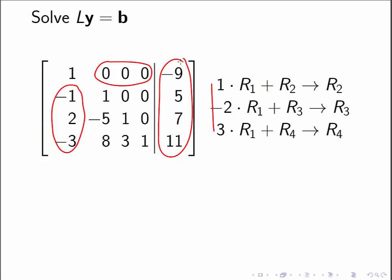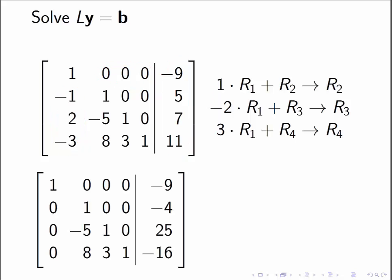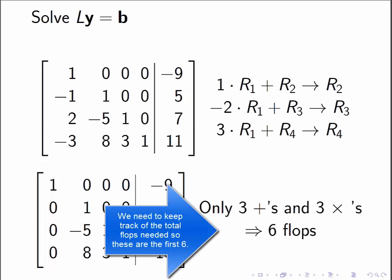So when I do the row operation 1 times row 1 plus row 2, I'm taking 1 times negative 9 and adding it to 5. That's the only thing that it takes to do that first row operation. So the result that I get is going to have zeros below the 1, and the last column is going to be changed, but these three columns in the middle here have not changed at all. As a result, I've only done three additions and three multiplications, so I've only done six floating point operations.